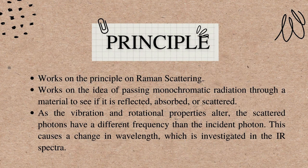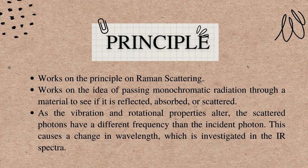The principle of Raman Spectroscopy is based on the Raman scattering concept. It passes monochromatic radiation through a substance to see if it is reflected, absorbed, or dispersed. The scattered photons have a different frequency than the incident photon when the vibration and rotational properties change. This results in a wavelength shift, which is studied in the IR spectra.